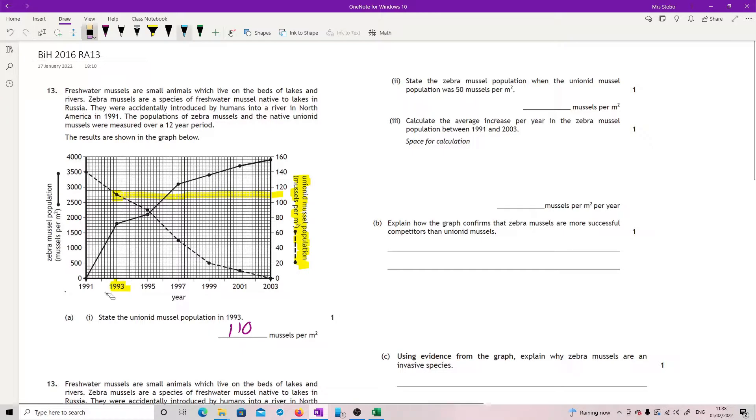So this is all about just being careful about where you read from and to. Right, so I'm looking for, to start with, the unionid mussel population. So this side, I want the 50, so I want bang in the middle of those two. Okay, I can't. There we go. Right, okay, so I'm looking at 1997. I'm on the graph, so it's not too bad.